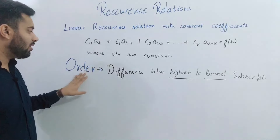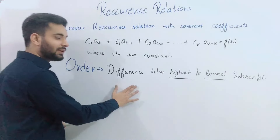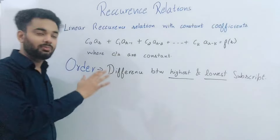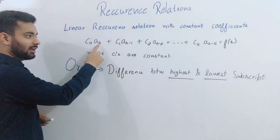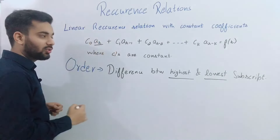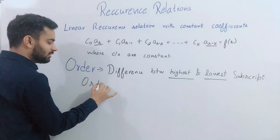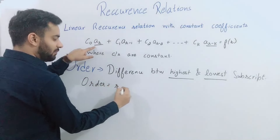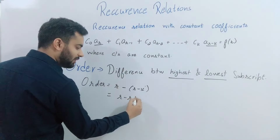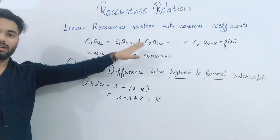Next we will talk about the order of a recurrence relation. The order is the difference between the highest and lowest subscript of the numeric functions appearing in the relation. For this general equation, the highest subscript is R (from A(R)) and the lowest is R-K (from A(R-K)). So the order equals R minus (R-K), which gives K. Therefore the order of this equation is K.